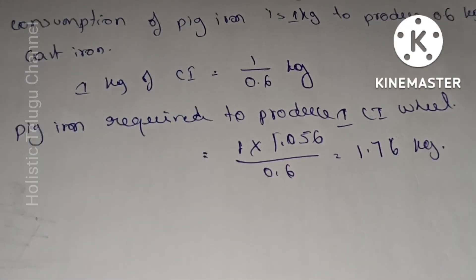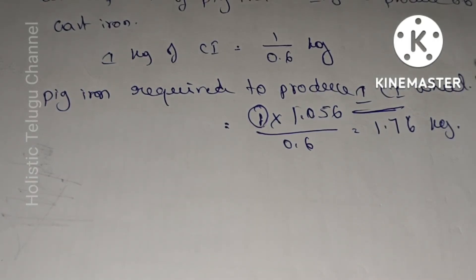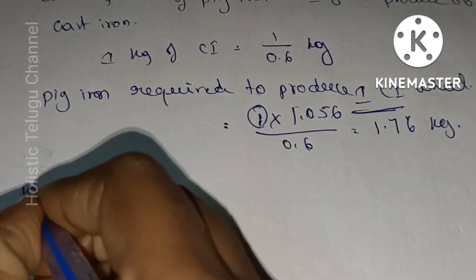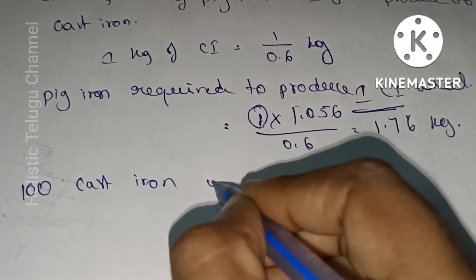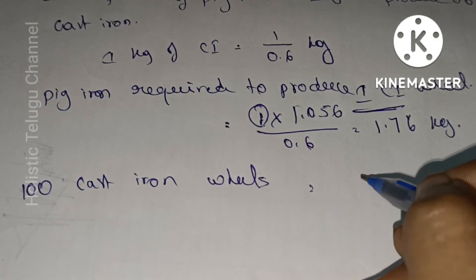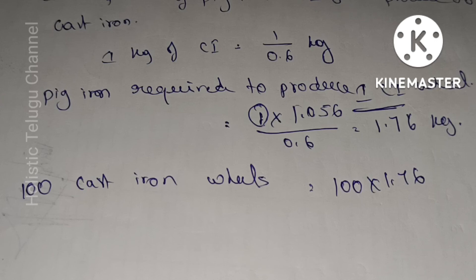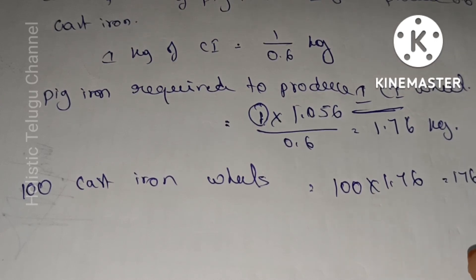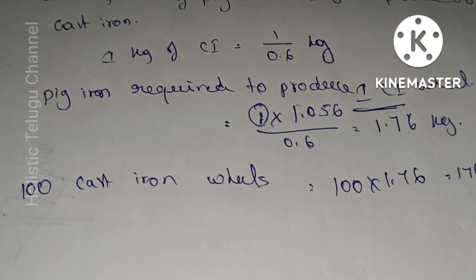Pig iron required per wheel is 1.76 kg. For 100 cast iron wheels: 100 × 1.76 = 176 kg of pig iron total.